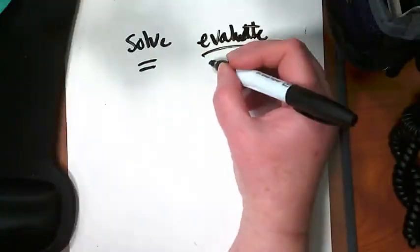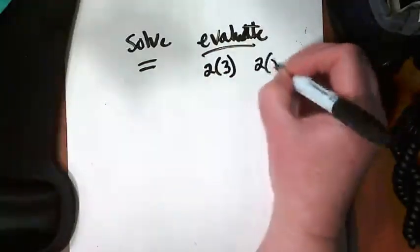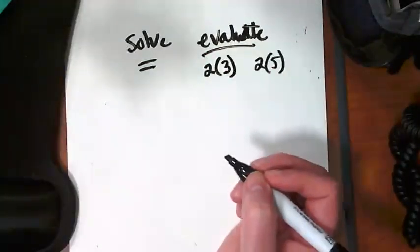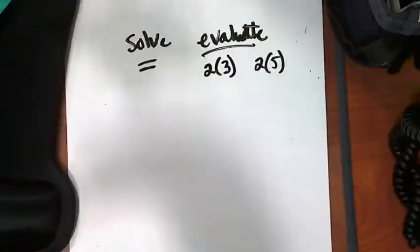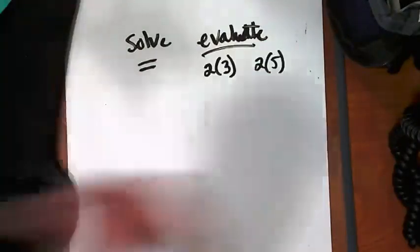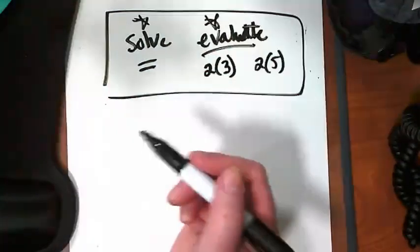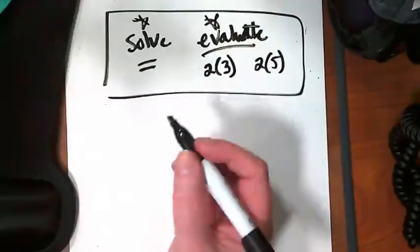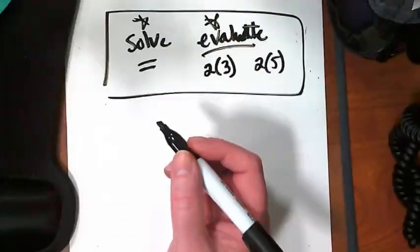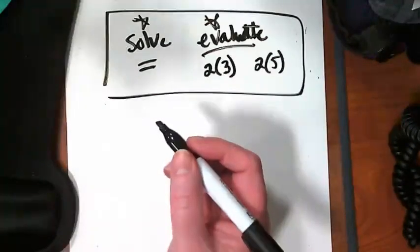Evaluate is what we use with an expression when we're putting in numbers and trying them. Think of my example where, what if x was three and what if x was five? I'm trying the same expression with different values. We are asked to solve equations and we are asked to evaluate expressions. Step one in evaluating is to substitute the values for your variables by replacing the variables with the given values.